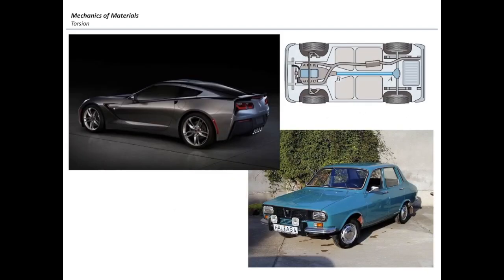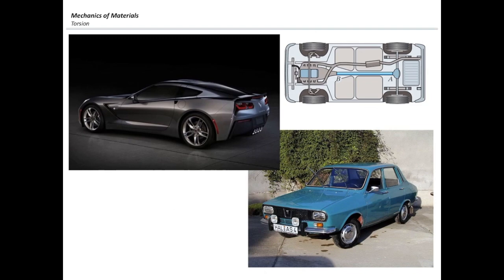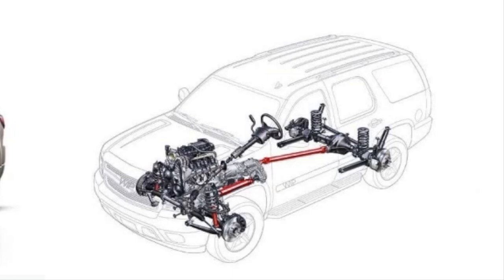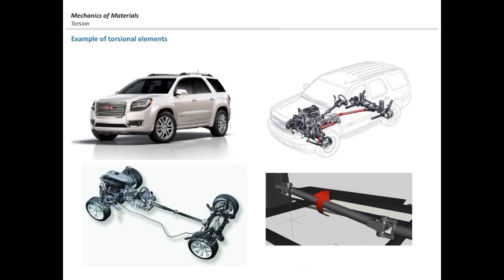Another example that many of you are familiar with is a vehicle. Almost every one of you drives a vehicle on a daily basis. There is one important element in the vehicle — it doesn't matter if you have a new vehicle or an old one — called the driving shaft. That shaft is responsible for transmitting the power generated in the engine all the way to the wheels, whether the front wheels, the back wheels, or all the wheels on the vehicle. That element is subjected to a torque.